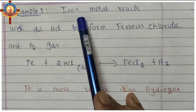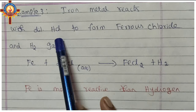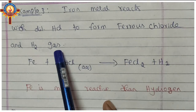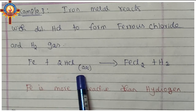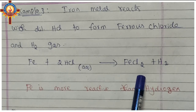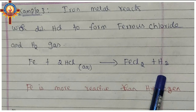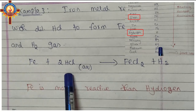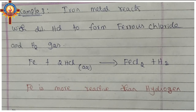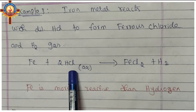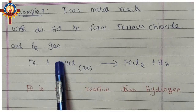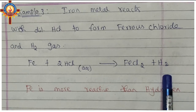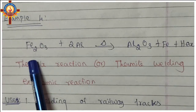Third example: iron metal reacts with dilute HCl to form ferrous chloride and hydrogen gas. In symbol form: Fe + 2HCl → FeCl₂ + H₂. According to the reactivity series, iron is more reactive than hydrogen, so iron can displace hydrogen from hydrogen chloride, and hydrogen gas is set free.